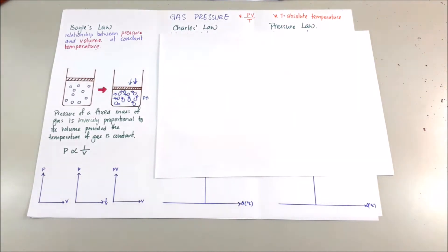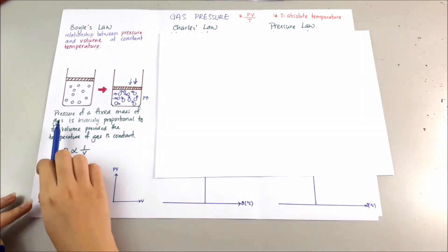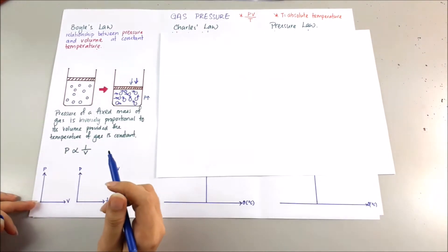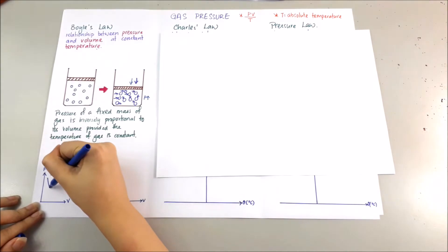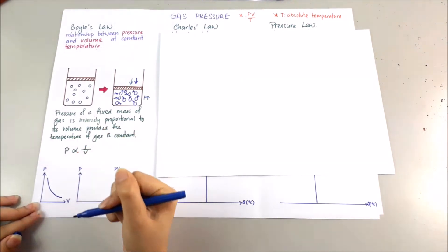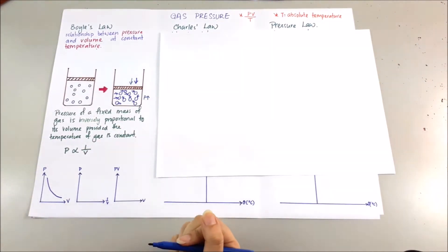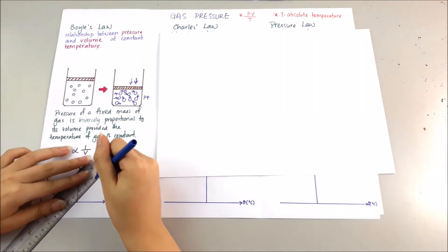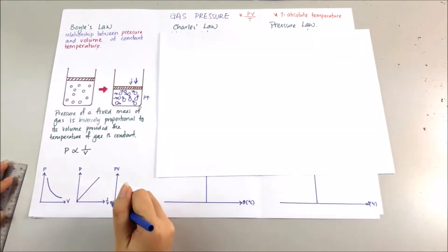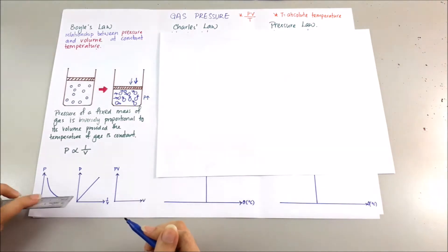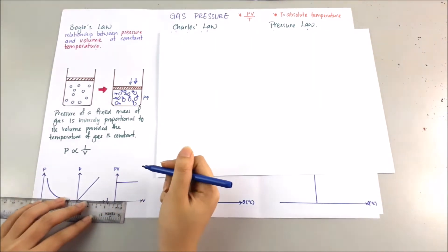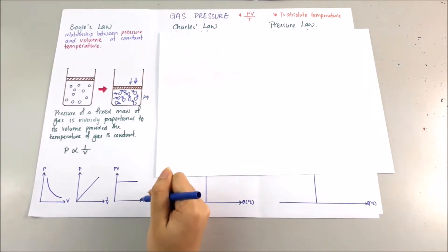If you are asked to draw a graph, since pressure is inversely proportional to volume, the graph should be drawn as a curve. Pressure is directly proportional to 1 over V. And lastly, PV is constant while V varies.